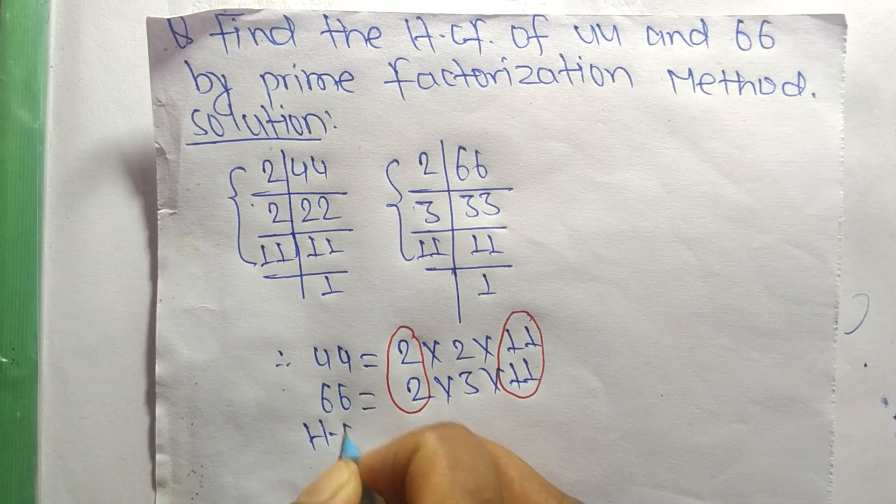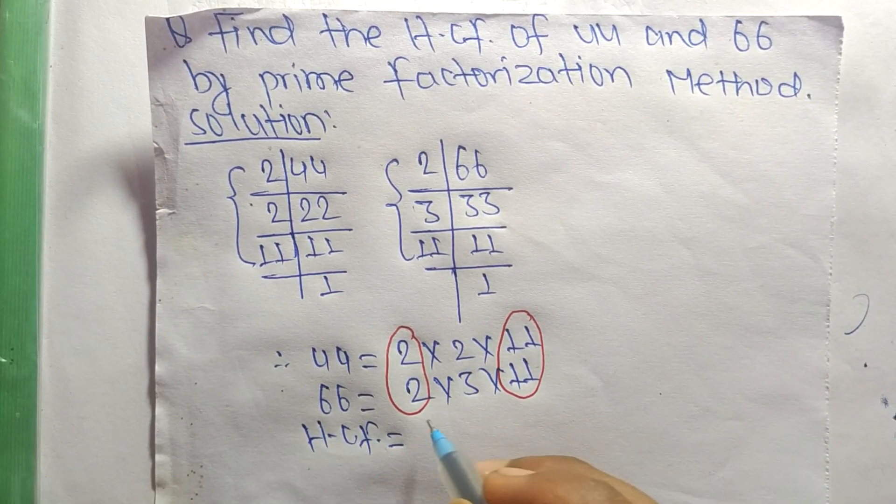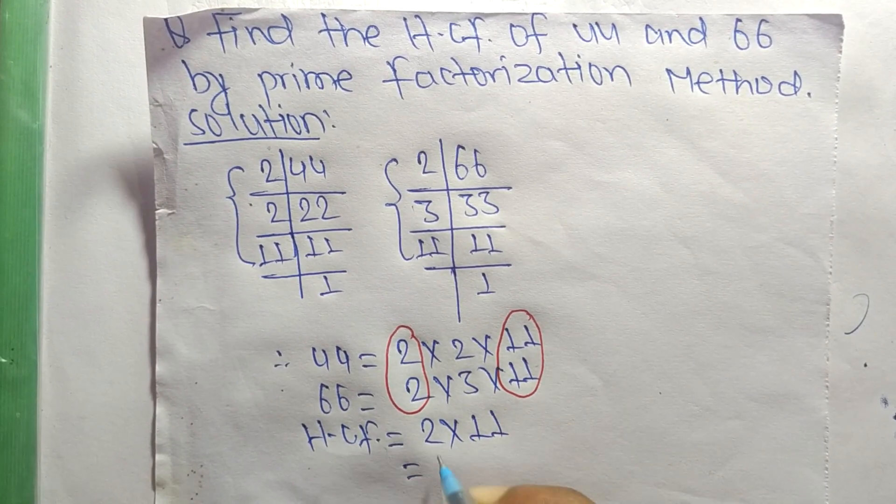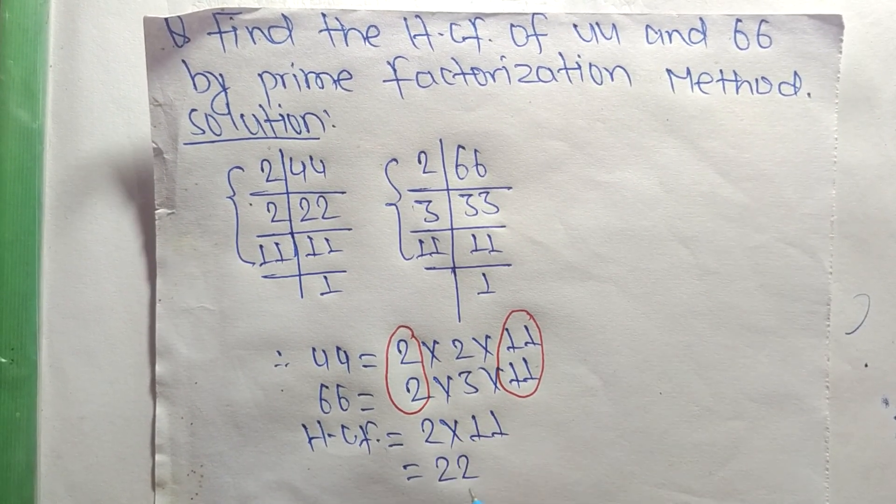So the HCF equals the common factors: 2 times 11, which equals 22.